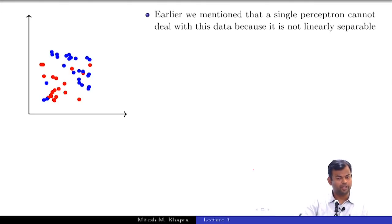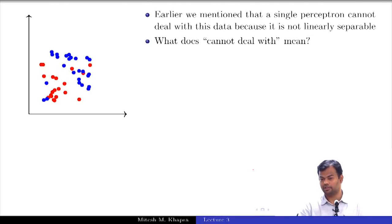Now in the case of perceptron, I had shown you this figure where this data is not linearly separable, which is obvious, and I had told you that perceptron cannot handle this data. But what do I mean by it cannot handle this data? It cannot give zero error. But what would happen if I run the perceptron algorithm on this? Take a guess.